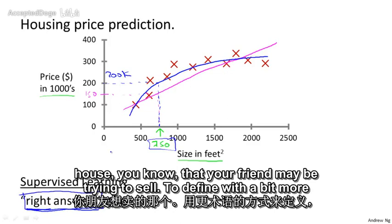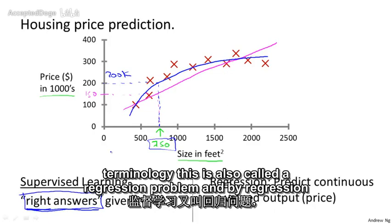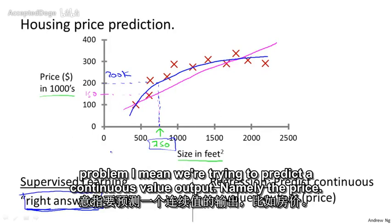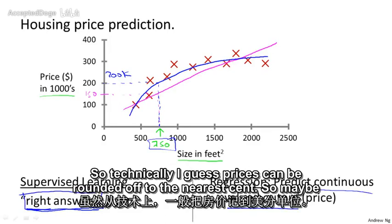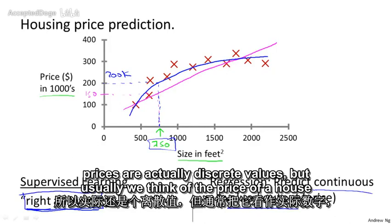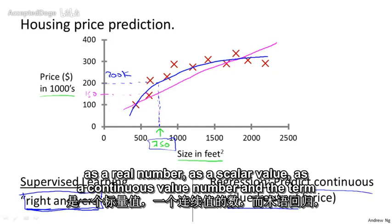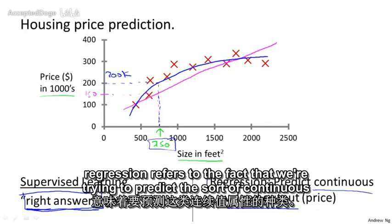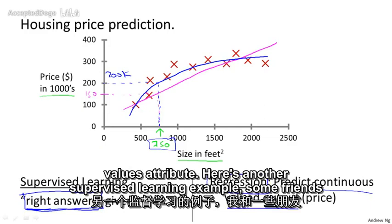To define a bit more terminology, this is also called a regression problem. By regression problem, I mean we're trying to predict a continuous value output, namely the price. Technically, prices can be rounded off to the nearest cent, so maybe prices are actually discrete values, but usually we think of the price of a house as a continuous value number. The term regression refers to the fact that we're trying to predict this sort of continuous valued attribute.